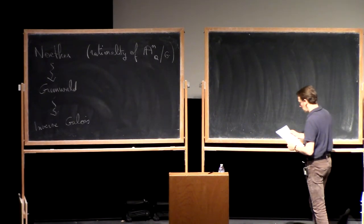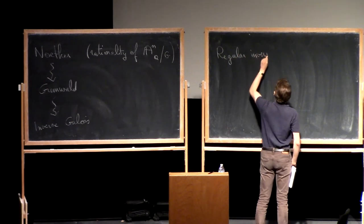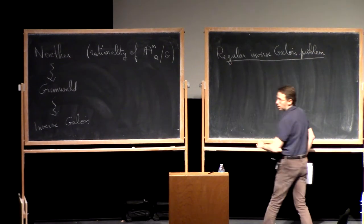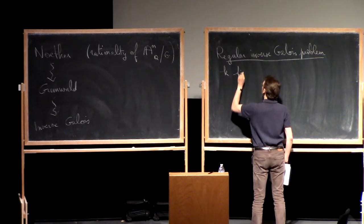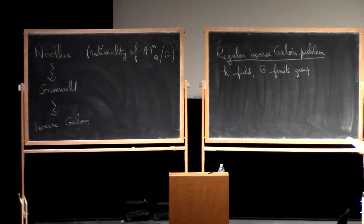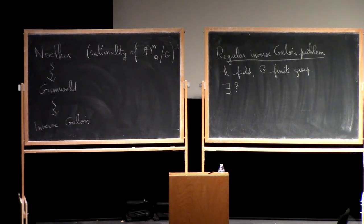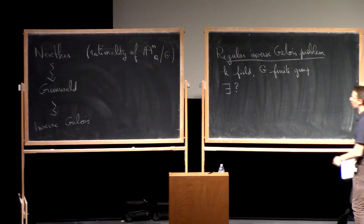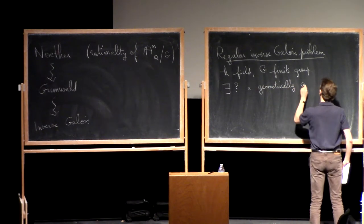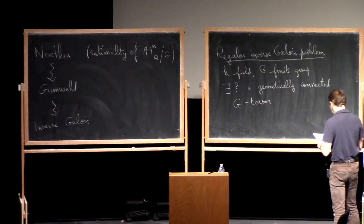Let's look for a torsor to which we could apply Hilbert's irreducibility theorem, but maybe not this one. Let's take the simplest one for which the base is rational: torsors over P¹, open subsets of P¹. That's the so-called regular inverse Galois problem, which you can ask over any field for any finite group G.